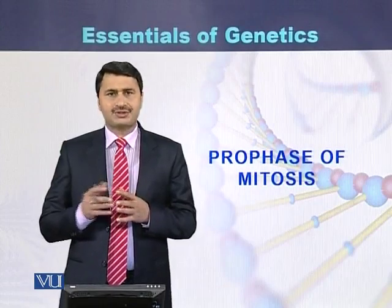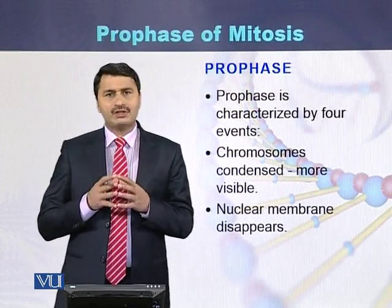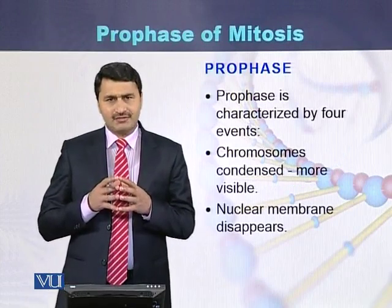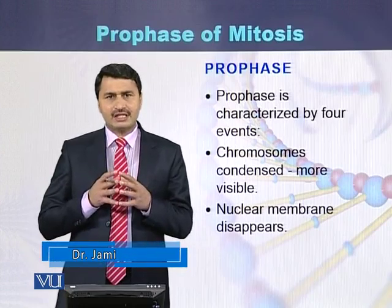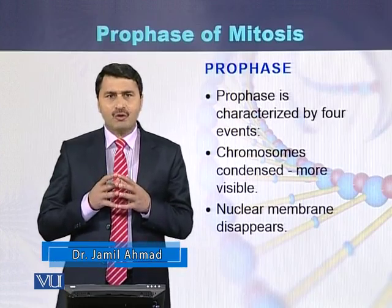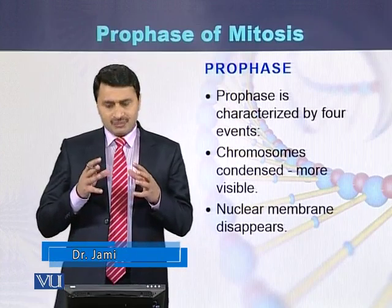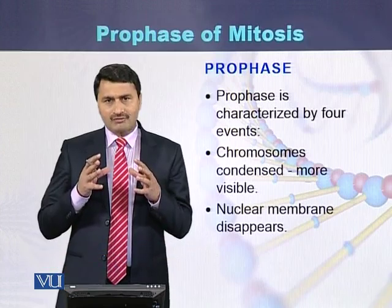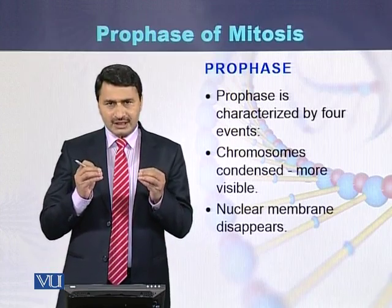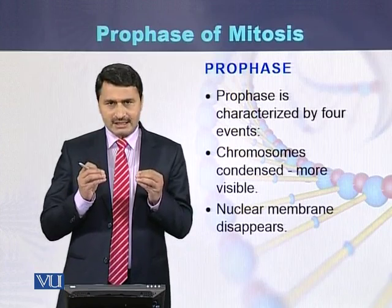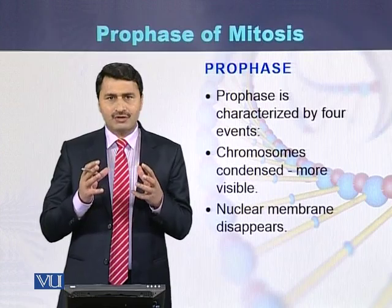Prophase of mitosis is the first stage of mitosis. Prophase is characterized by four events. The first event is the condensation of the chromosomes — chromosomes become thick and small in size and they are more visible during the prophase.